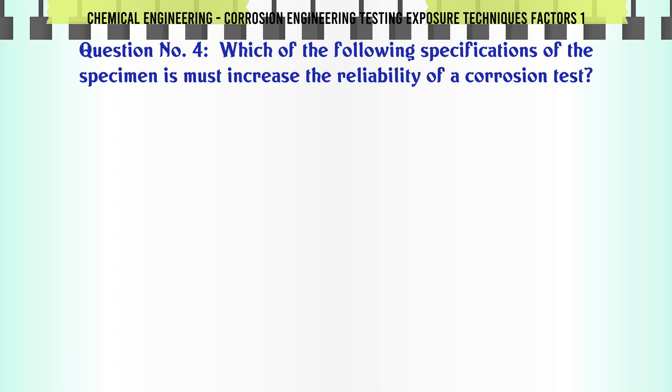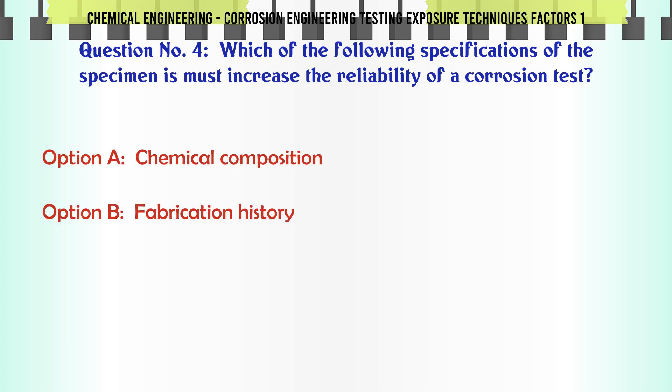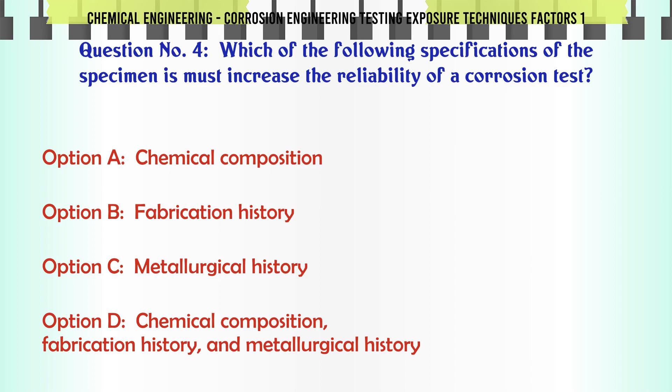Which of the following specifications of the specimen must increase the reliability of a corrosion test? A. Chemical composition. B. Fabrication history. C. Metallurgical history. D. Chemical composition, fabrication history, and metallurgical history.